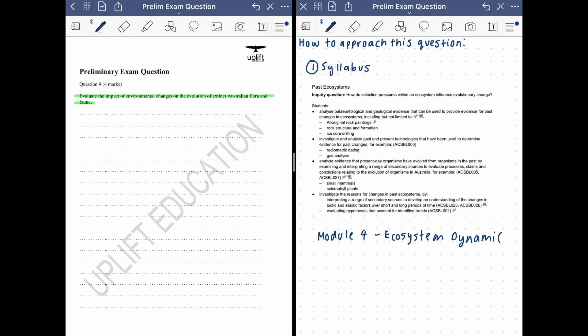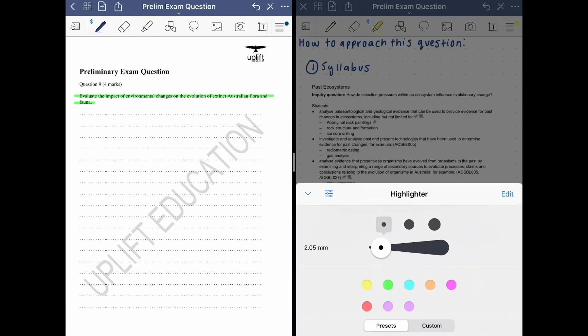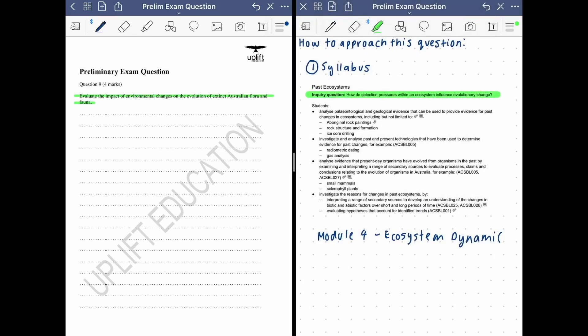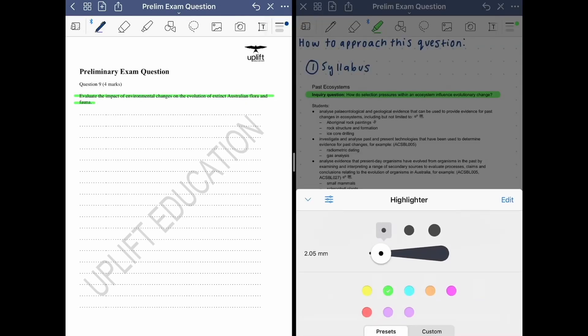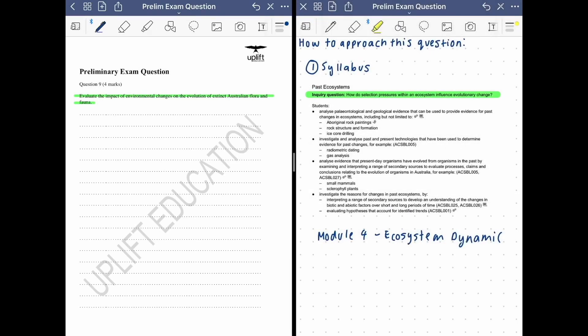This part is especially inquiry question number two. So we're not covering the entirety of module four in this question, just a specific part of that. Even with the inquiry question, it's not the whole inquiry question. The area we're going to be focusing on is mainly this area over here, the one that's asking us to look at previous Australian animals and how they've evolved into today's animals which are small mammals and sclerophyll plants. So this is essentially the evidence we'll be using in our question.